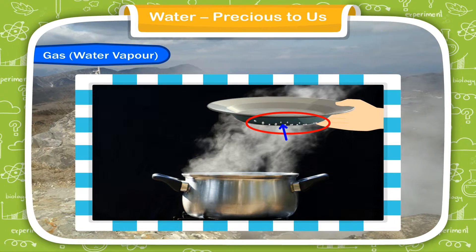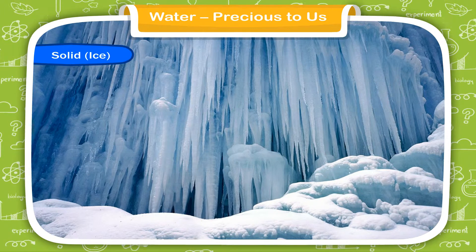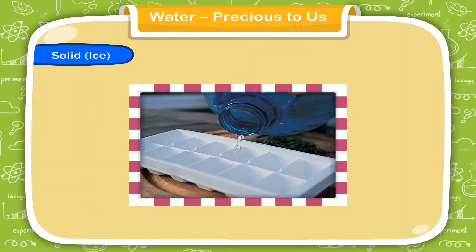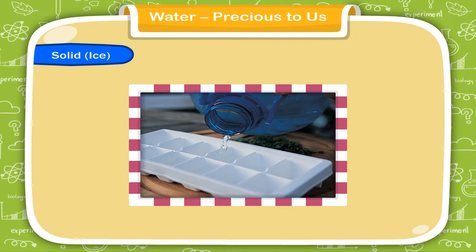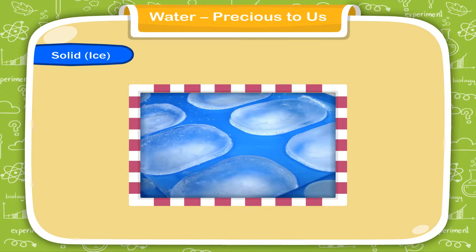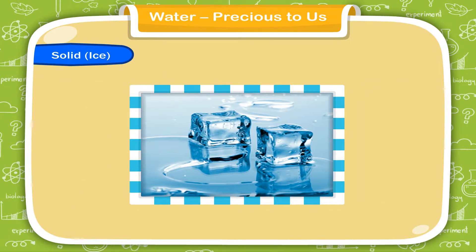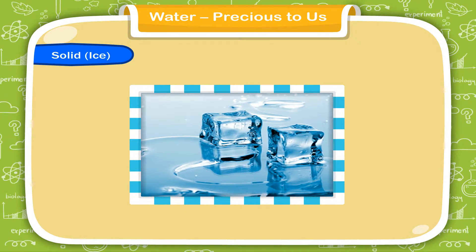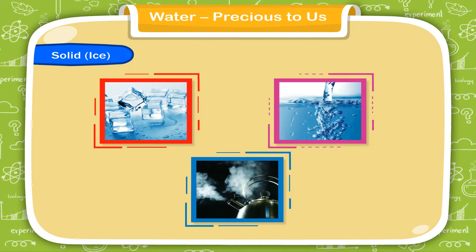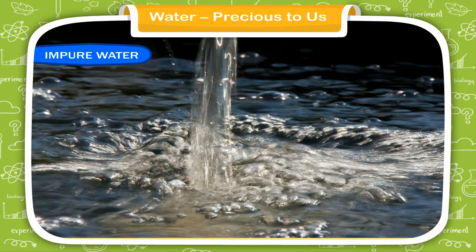Solid ice: ice is the solid form of water and has a fixed shape. When you put some water in the freezer of your refrigerator, after some time it changes into ice. When ice melts, it again changes into the liquid form of water. Thus, ice, water, and water vapor are the three forms of water.